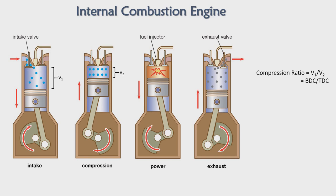The compression ratio is also written as BDC to TDC — bottom dead center to top dead center. During the intake stroke, the piston goes down to the bottom dead center. At the end of the compression stroke, it comes to the top dead center. The ratio of bottom dead center volume to top dead center volume is known as the compression ratio. Greater the compression ratio, greater will be the efficiency of the fuel or engine.